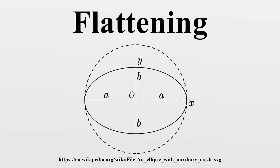Flattening is a measure of the compression of a circle or sphere along a diameter to form an ellipse or an ellipsoid of revolution respectively. Other terms used are ellipticity or oblateness.